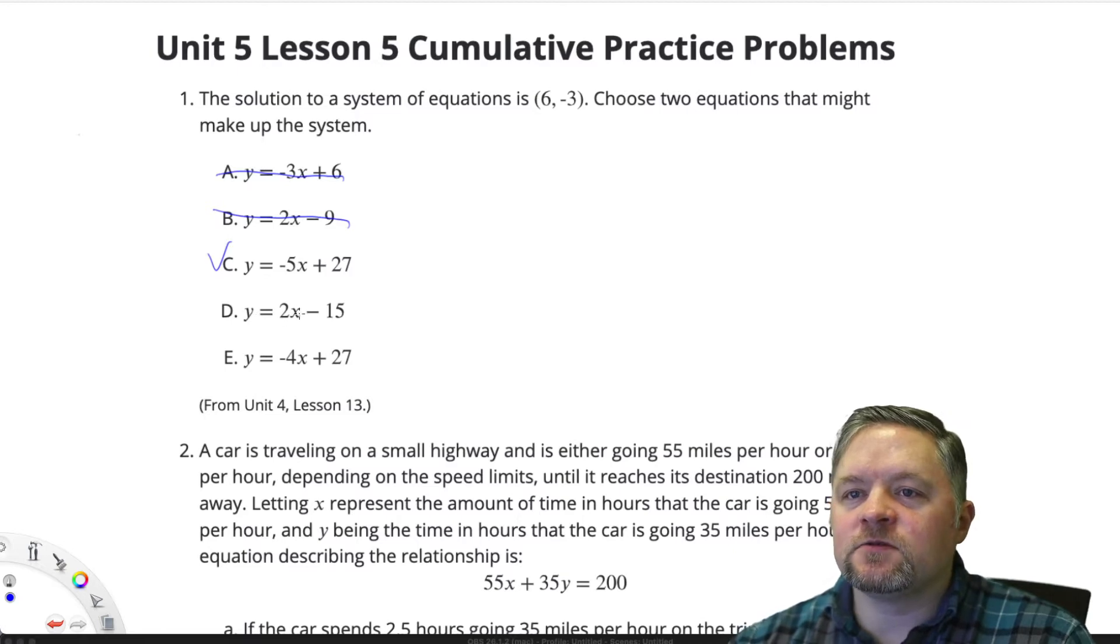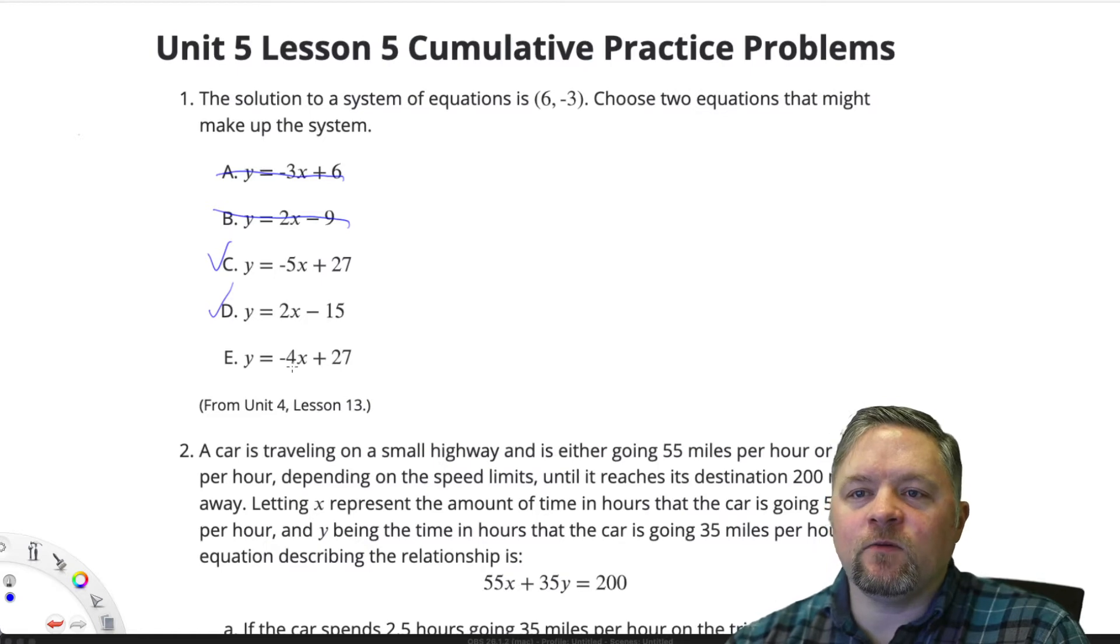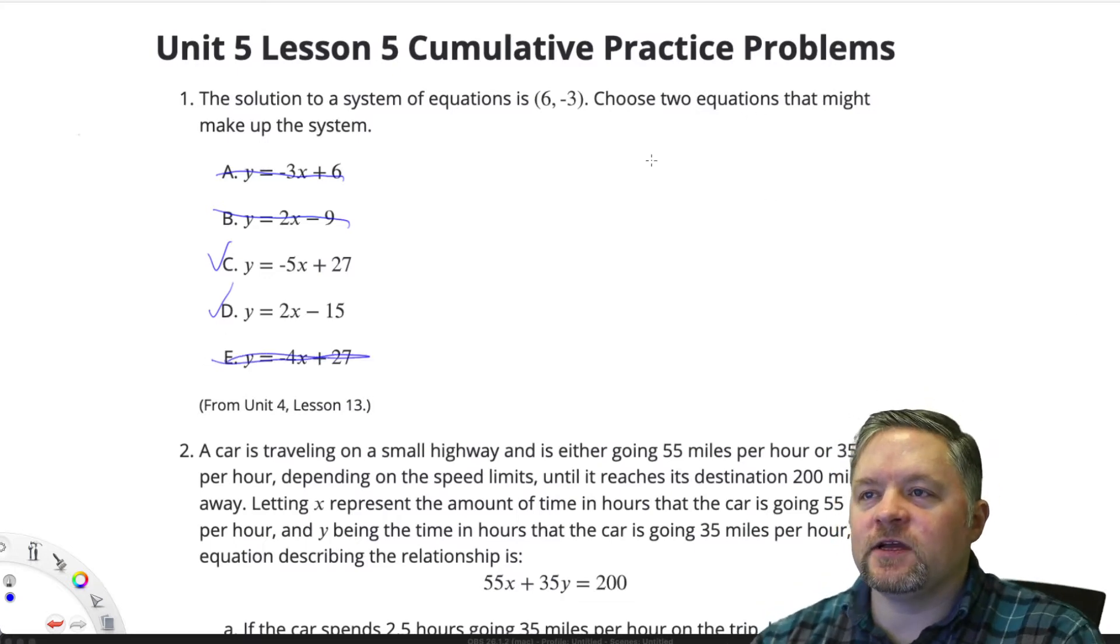D, y equals 2 times 6 is 12, subtract 15, is negative 3. E, y equals negative 4 times 3 is negative 12, plus 27 is going to be a positive number. That's not going to work. Okay, so the answer to this is C and D.